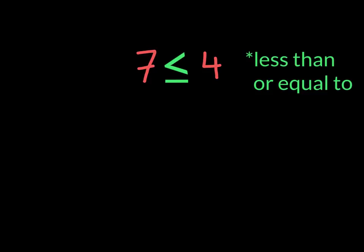This would be read as seven is less than or equal to four. Well, seven is not less than four, so that's out. And it's not equal to four. Neither of these two apply, so this statement is false.